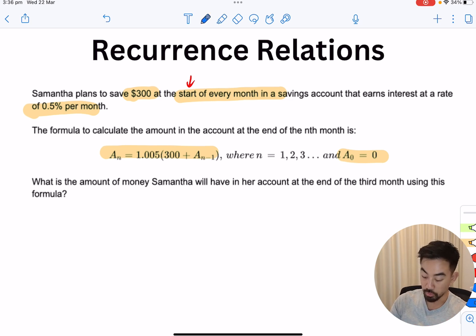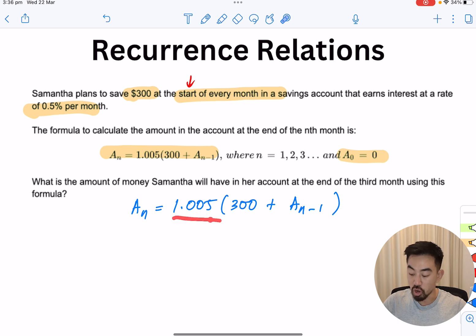Let's just start off by looking at this formula. An equals 1.005 times (300 plus An-1). So what this formula is saying, it's actually just compound interest but a little bit more complicated in terms of it's adding on, in this case, deposits of $300 and this 1.005 is just coming from this formula here. FV equals PV times (1 plus r) to the power of n. So this 1 plus r thing is in this case your 1.005 because it's 0.5% per month.